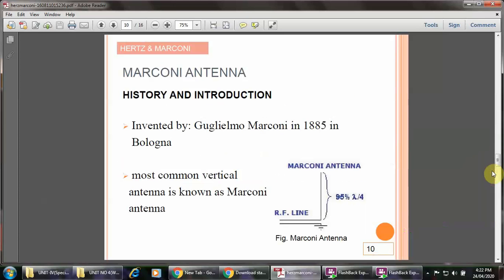Now we move to the Marconi antenna. It is an advanced version of the Hertz antenna, invented by Guglielmo Marconi in 1885 in Bologna. The most common vertical antenna is known as the Marconi antenna. The Marconi antenna is a monopole type because one terminal is connected to ground, and only one terminal is used for signal radiation.